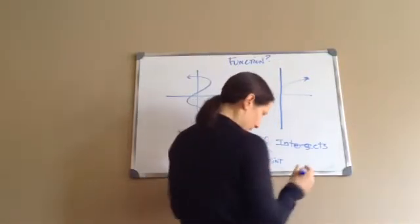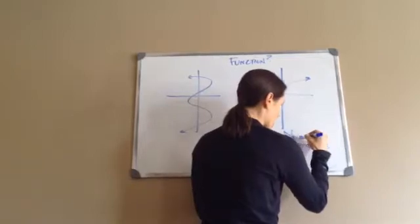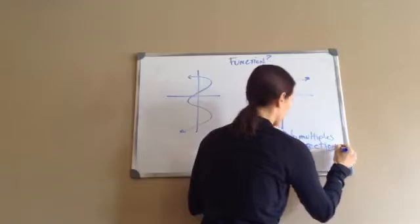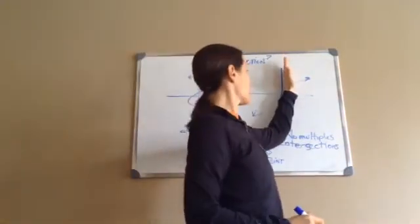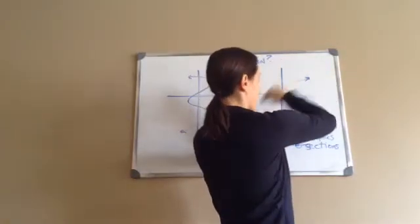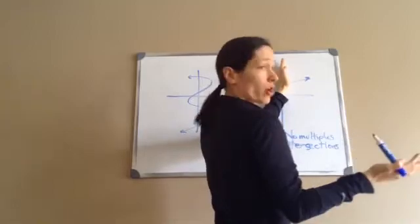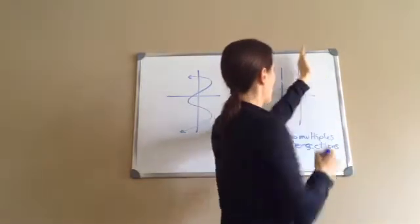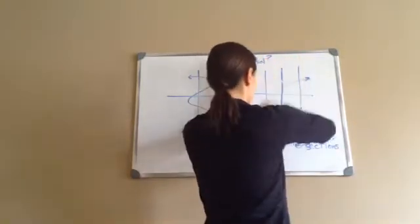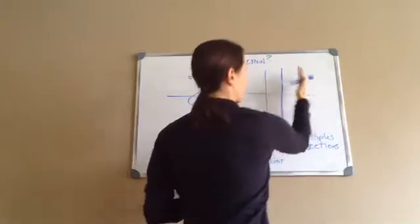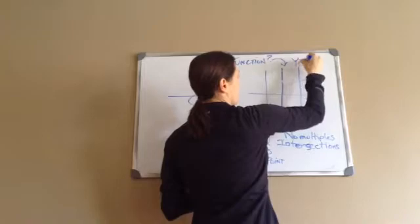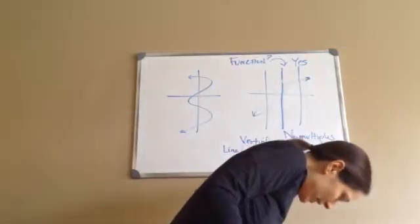And another way you could see is that you do not have, there are no multiple intersections where they cross. So as you can see, this is my vertical line. How many times did it cross through this graphing of this line? One time. Now, I could also go, if I draw one over here, how many times does it cross? One time. If I draw a line here, how many times does it cross through this? One time. So no matter where I draw my vertical line, I'm only crossing one time. This is a function. That one is a function.